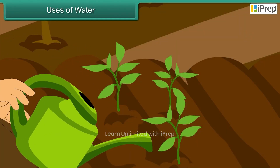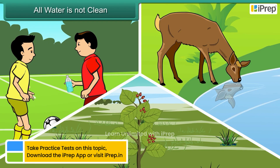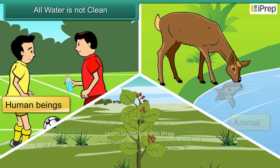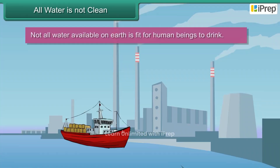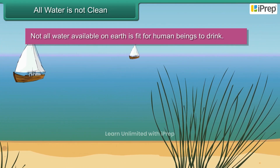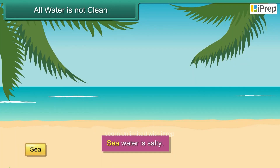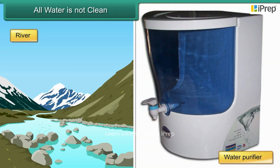We also swim in water and use it to water our plants. All water is not clean. All living things — human beings, animals, and plants — need water to live, but not all water available on earth is fit for human beings to drink. Sea water is salty, and river, pond, and tank water is dirty.